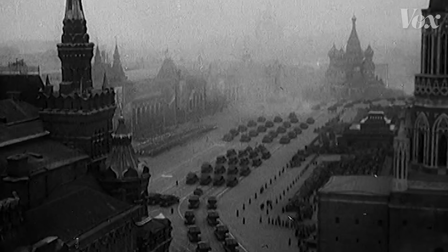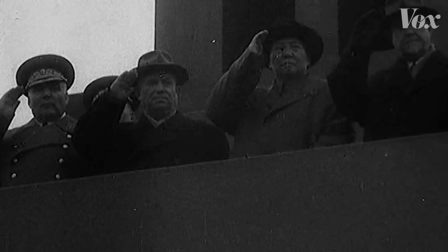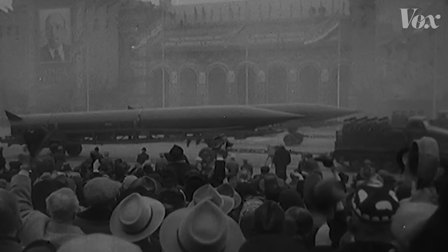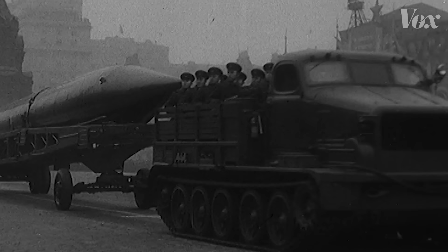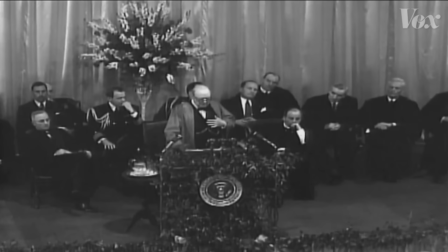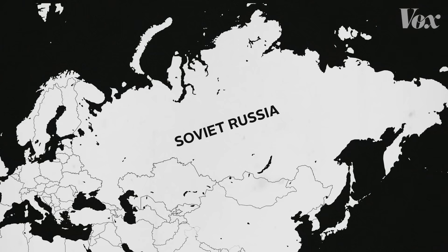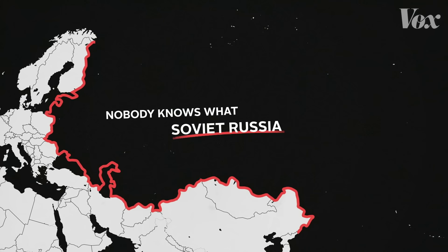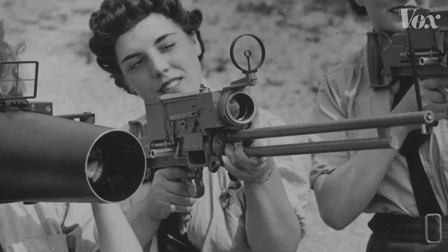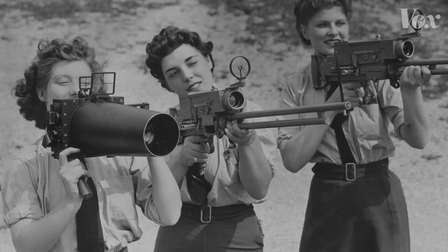But the U.S. initially had a hard time keeping track of their nemesis. The Soviet Union was notoriously secretive and hid itself and its actions from the world. 'An iron curtain has descended across the continent. Nobody knows what Soviet Russia intends to do in the immediate future.' Then-U.S. President Dwight D. Eisenhower saw a solution that built on experimental intelligence gathering from World War II — aerial photo analysis.